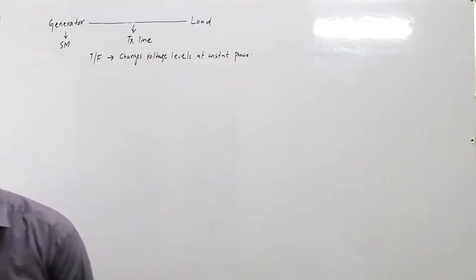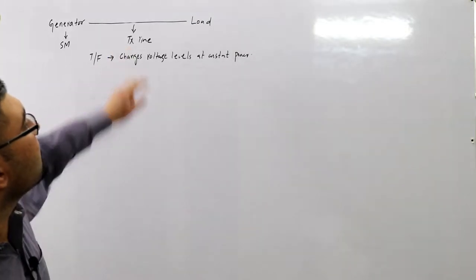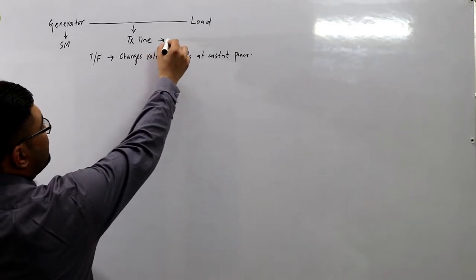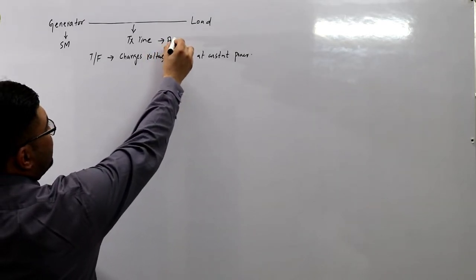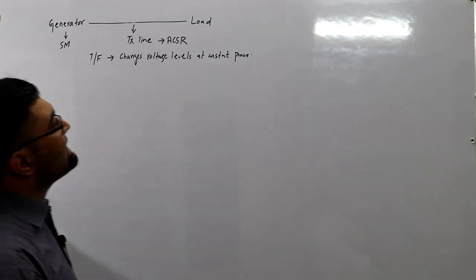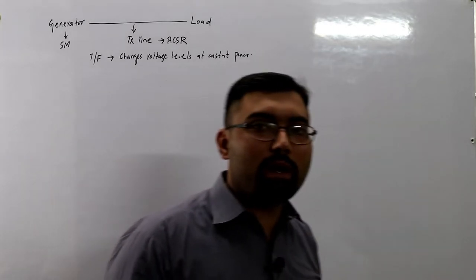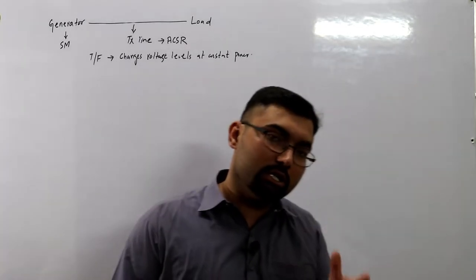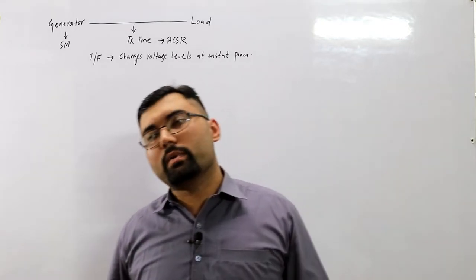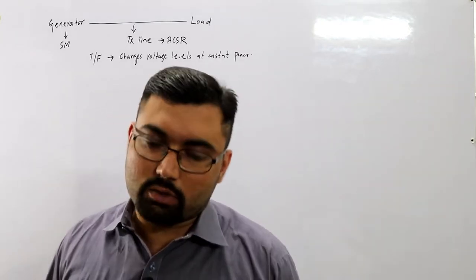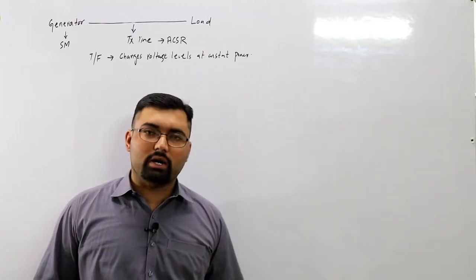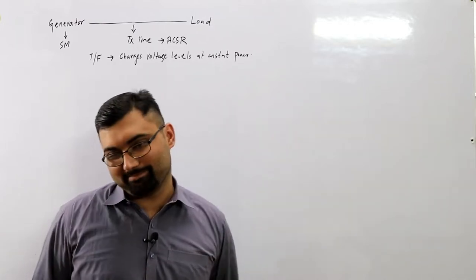The transmission lines used are ACSR — Aluminum Conductor Steel Reinforced. The steel provides mechanical strength while the aluminum provides good conductivity. Why not copper or other materials is not part of this discussion.